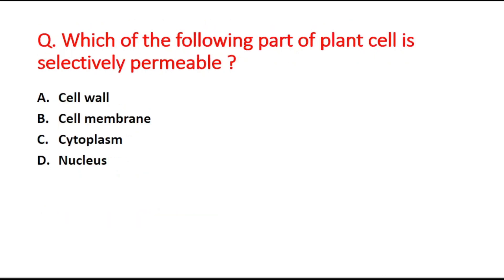Next question: which part of the plant cell is selectively permeable? Option A is cell wall, option B is cell membrane, option C is cytoplasm, and option D is nucleus. The right answer is option B, cell membrane.